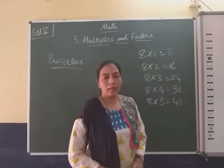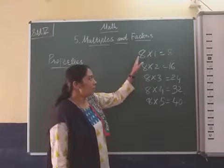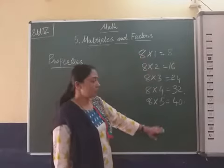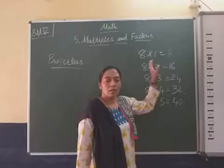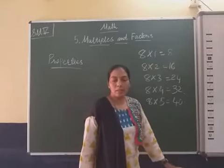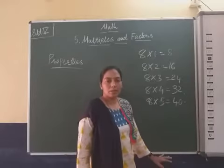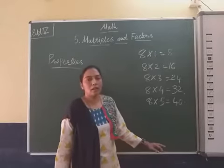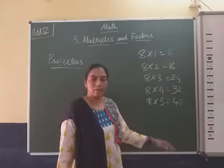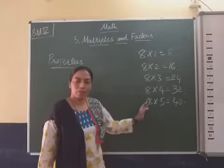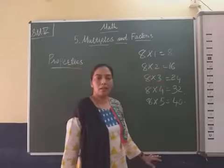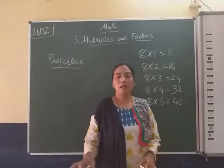The second property is that multiples of a number are unlimited. Every number has unlimited multiples — they are continuous. We can't say there is a greatest multiple, because whenever we multiply, we find a greater multiple. It is unlimited.